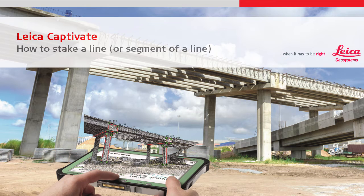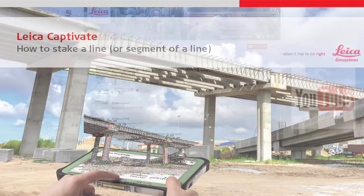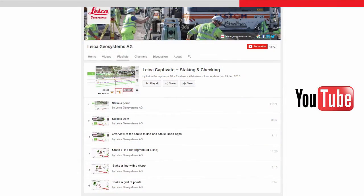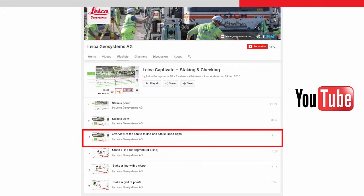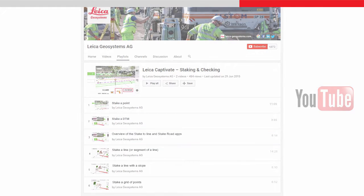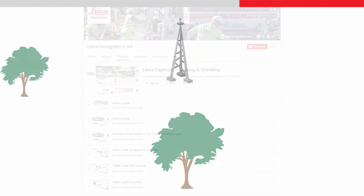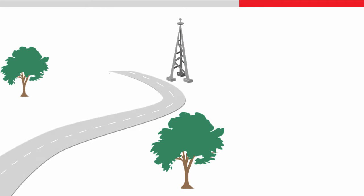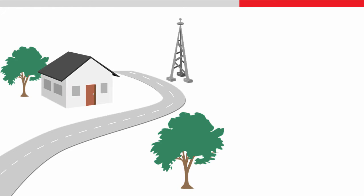This video is part of a series on staking to lines within Leica Captivate. It will show how to use the Stake to Line app for staking a line or a segment of a line. The video follows on from the Staking a Line Overview video and uses the example house project, where several different lines form a road, a building footprint, a service line, and a pipeline.